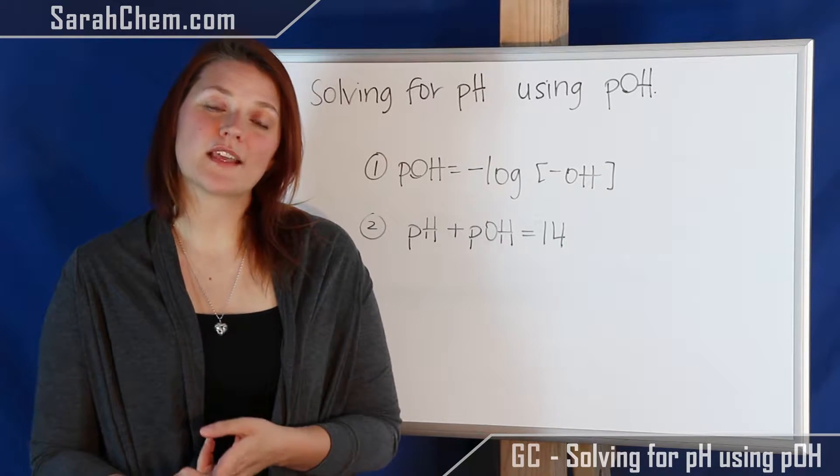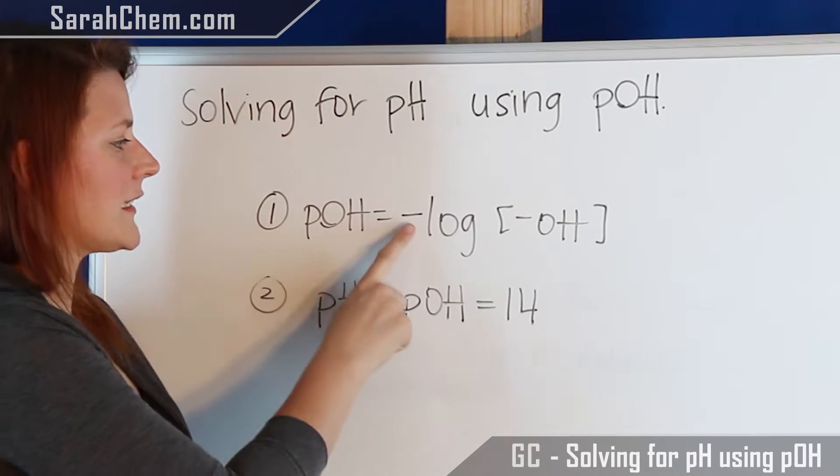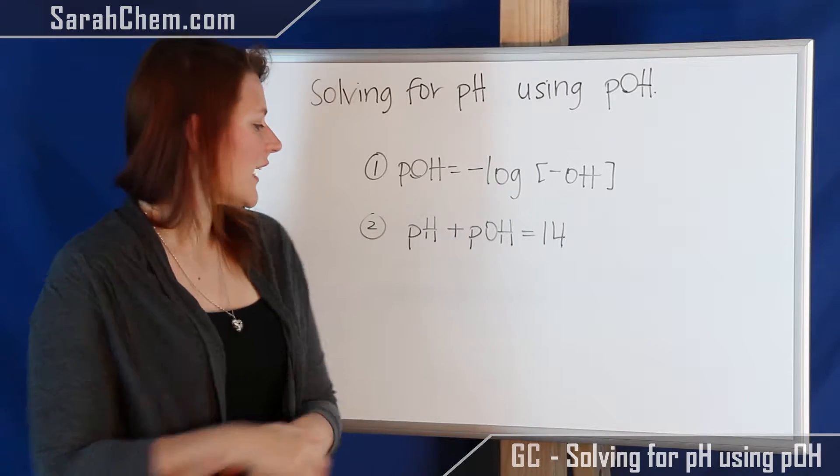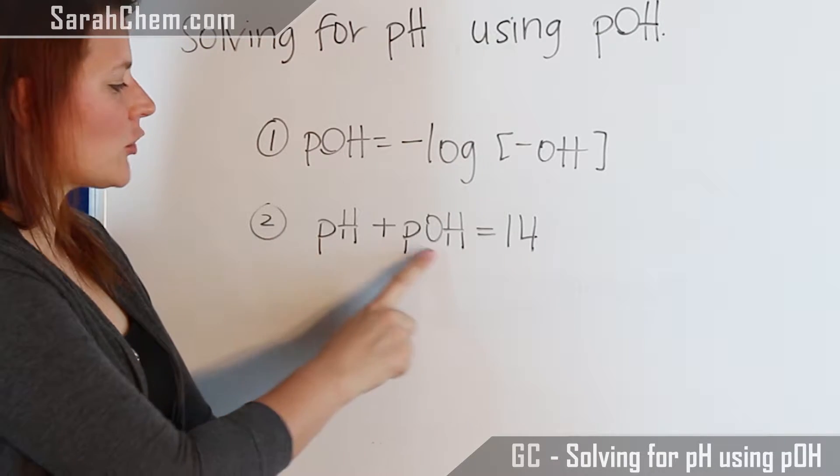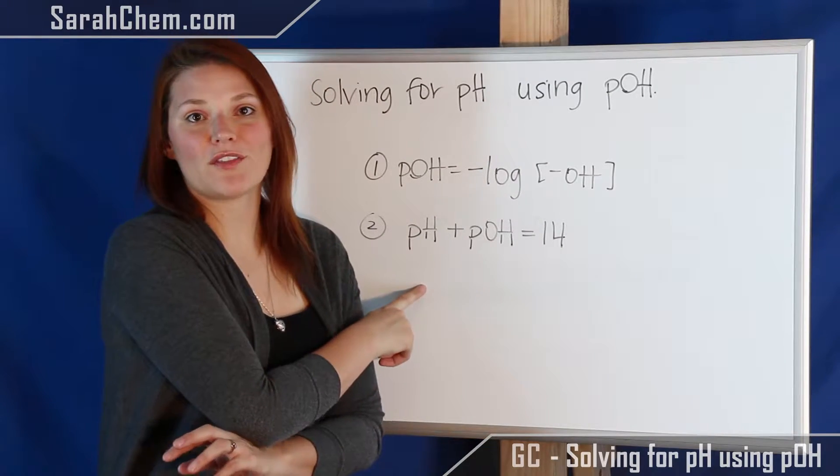So before we do an example, there are two things I want to point out. The first one is that the equation for pOH is the negative log of the hydroxide concentration. The second thing is that when you add pH and pOH, you get the value of 14. So if you know one, you can figure out the other.